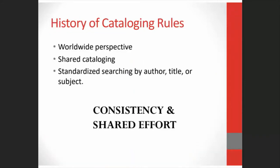How do we know how to catalog? We're going to follow some rules. In the mid to late 1800s, librarians began to consider collections from a worldwide perspective. Previous to this time, librarians created the cataloging information for each individual item for his or her individual library collection, and each library did things a little bit differently. There was a lot of duplicated effort, since many libraries had similar or the same items.